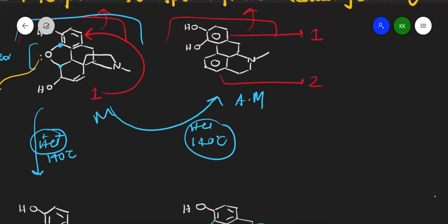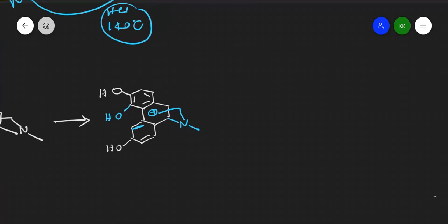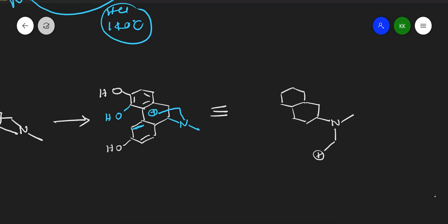Redrawing this intermediate clearly: keeping everything the same, we have N-CH₃-CH₂-CH₂-CH₂-CH₂ with a positive charge on carbon, a double bond, an OH group, and the aromatic ring is now a phenol with two OH groups present.